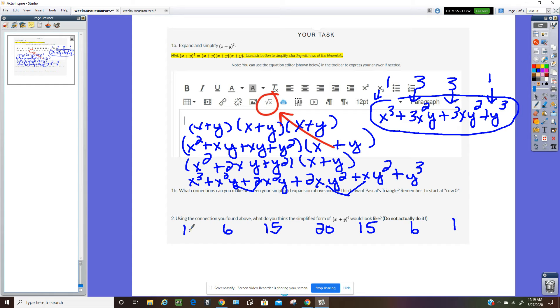This would be 1x to the 6th. And then notice that the powers of x decreased down to 0. And the powers increased from 0 to 3 here. Since I started x to the 6th here, this would be x to the 5th, y to the 1st. 5 plus 1, 4 plus 2.